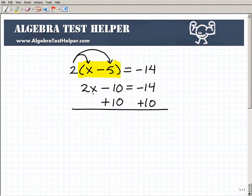So I have 2x minus 10 equals negative 14. I'm going to add 10 to both sides of the equation, and I'm going to add down in a column manner, always in a column. So now I have 2x plus nothing is 2x. Negative 10 plus 10 is 0. So on the left-hand side of the equation, it just leaves me with 2x.